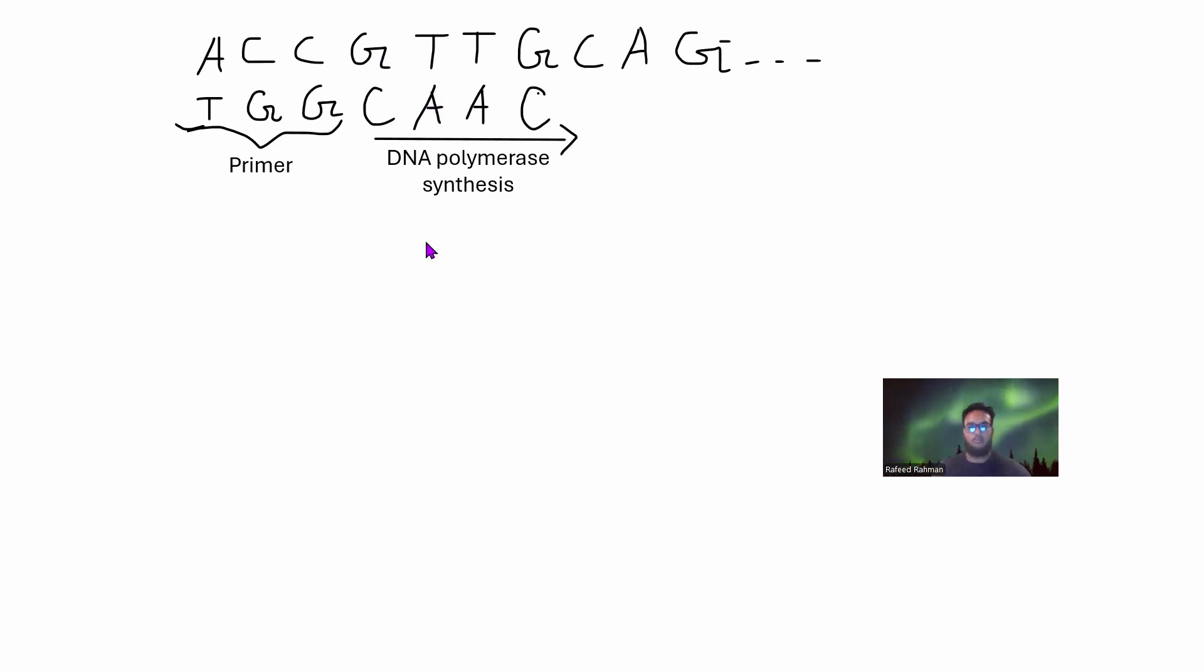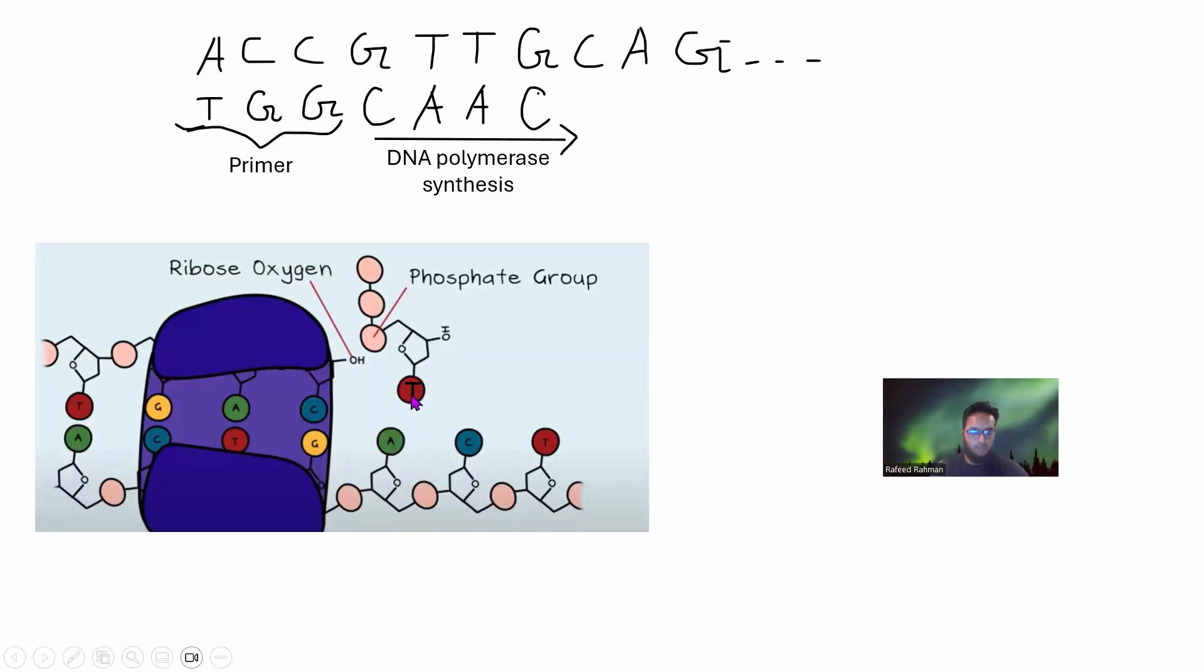You can see that in place of A as a complementary, T is being attached. What's really happening is the dNTP that is before - it's dCTP - has an OH right there. This OH is attached to the phosphate group of the next dNTP, which in this case is dTTP. These two things will be attached and thus this strand will keep growing. DNA polymerase will keep synthesizing until the end of the single strand.